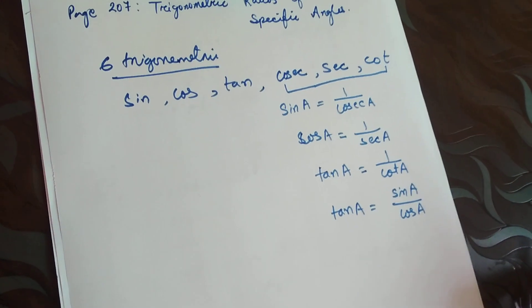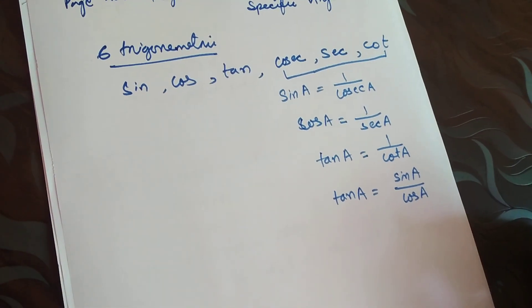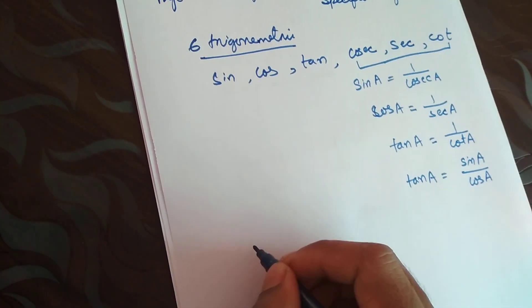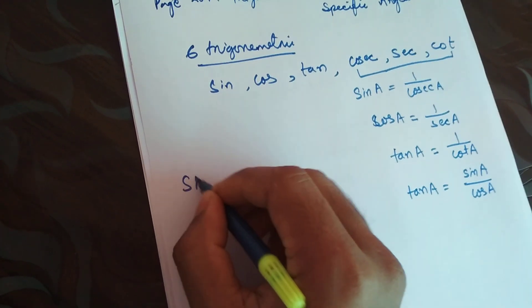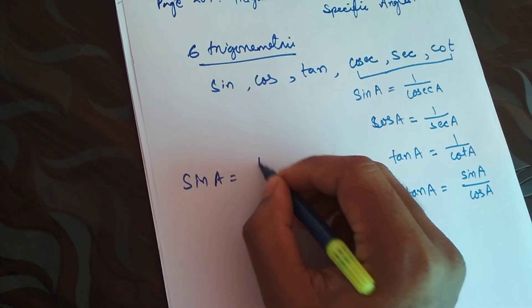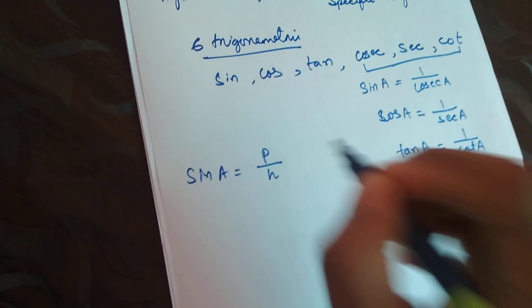These are the basic terms that we are looking into. Now for example, if we know how to find sine A of something, sine A was perpendicular P by H.